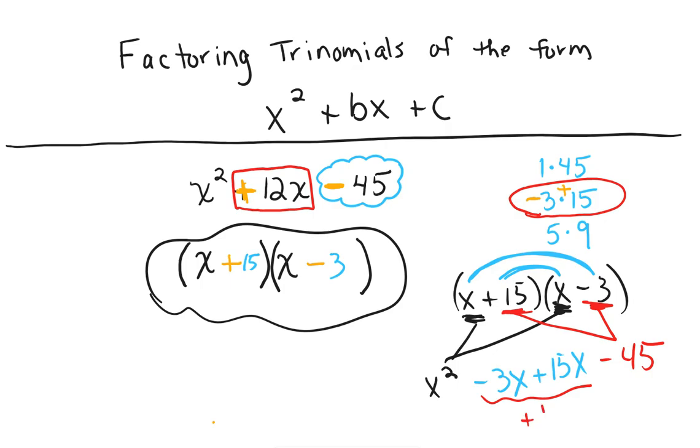And of course, these two here do add up to a positive 12x, so there it is. x squared plus 12x minus 45, that is the correct answer.